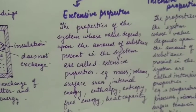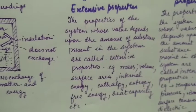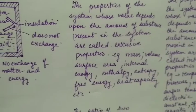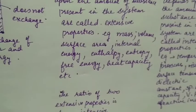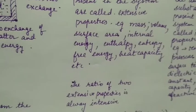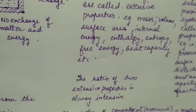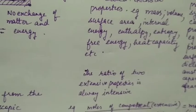The properties of system whose value depends upon the amount of substance present in the system are called extensive properties. Just like mass, volume - if there is more amount then mass will be more, if less amount then mass will be less. Similarly volume, surface area, internal energy.